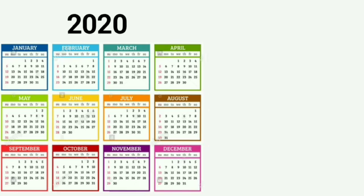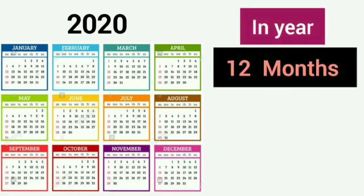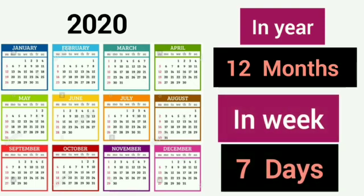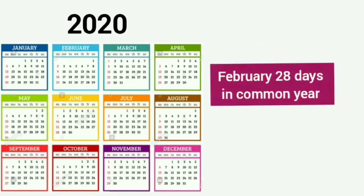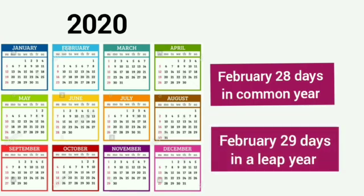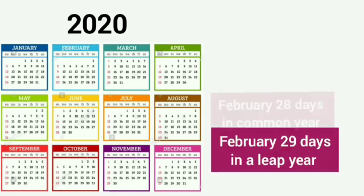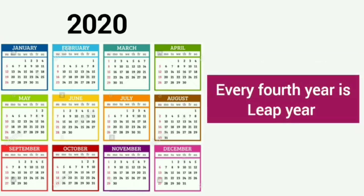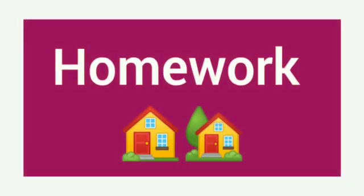We have learnt with the help of the calendar that there are 12 months in a year and 7 days in a week. There are 28 days in February in a common year and 29 days in a leap year, and leap year comes after every 4 years. So, in your homework, dear children, you will prepare a calendar of your own at home.